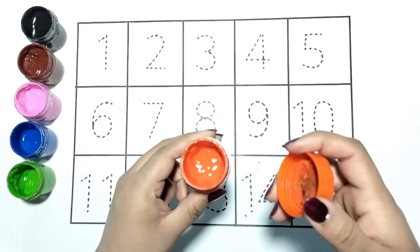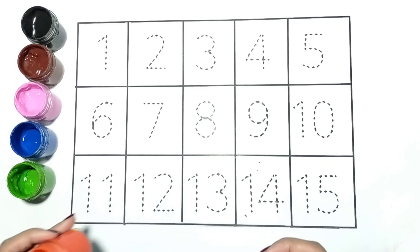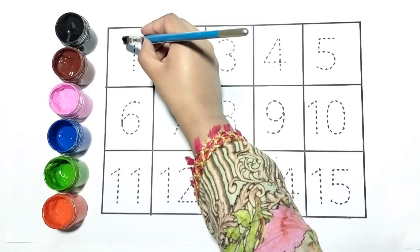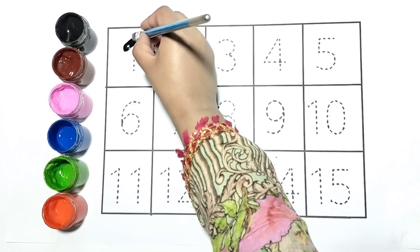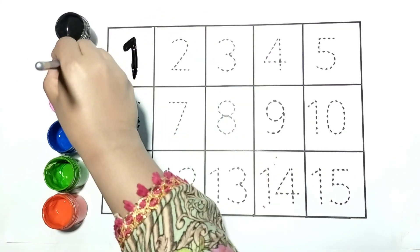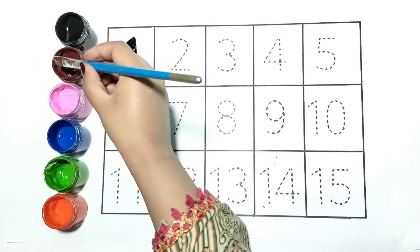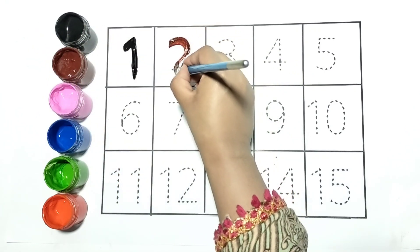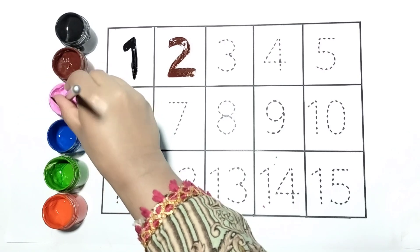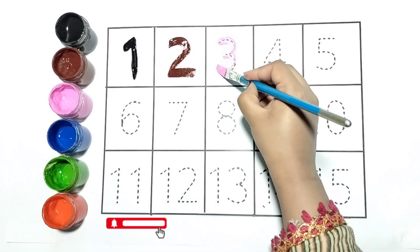Orange. Let's start writing with lovely colors. Let's write one. I am writing one with black color. Let's write two. This is number two, I am writing it with brown color. Now I am writing three.